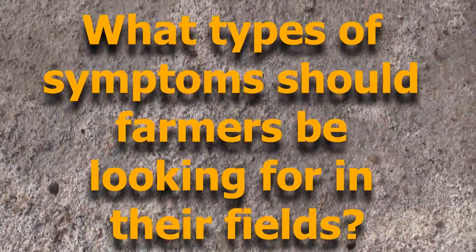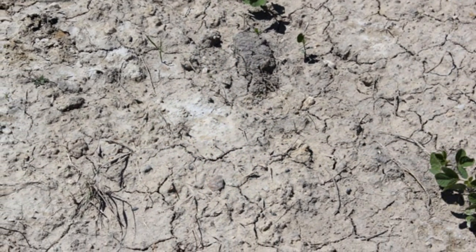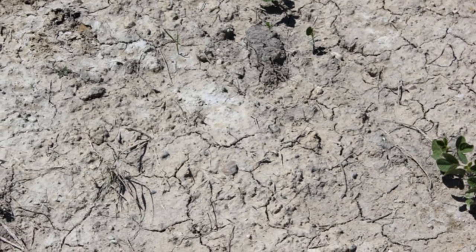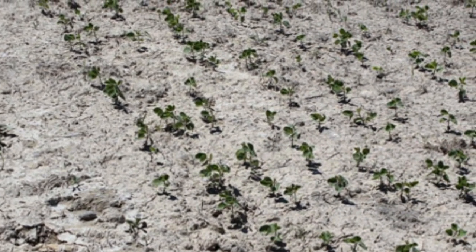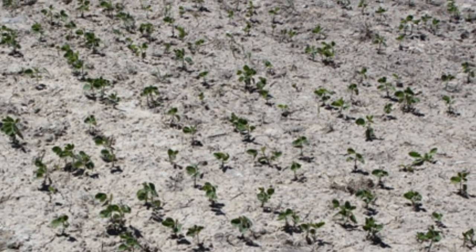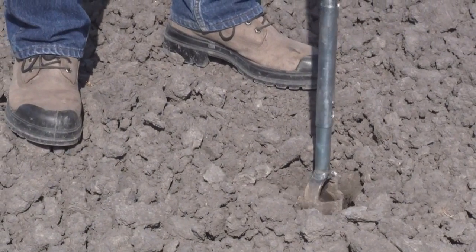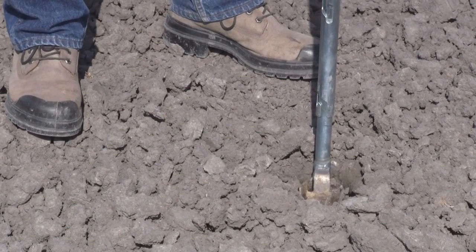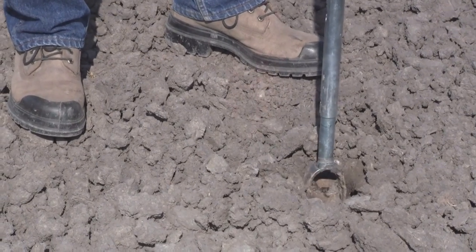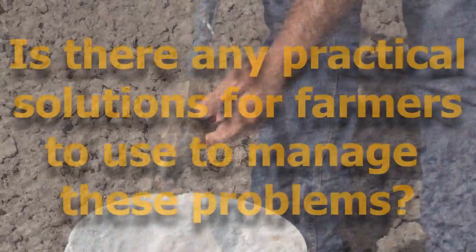What type of symptoms should farmers be looking for in their fields? The most common symptom is the white soil crust on the soil surface. Poor or no seed germination, along with stunted plant growth, is another example. However, it may be due to some other problems too. To assess the severity of the problem, it is recommended to sample soils and get them analyzed for salinity or sodicity problems.